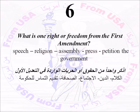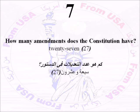Number Six: What is one right or freedom from the First Amendment? You can say freedom of speech, religion, assembly, press, or petition the government. Number Seven: How many amendments does the Constitution have? Twenty-seven.